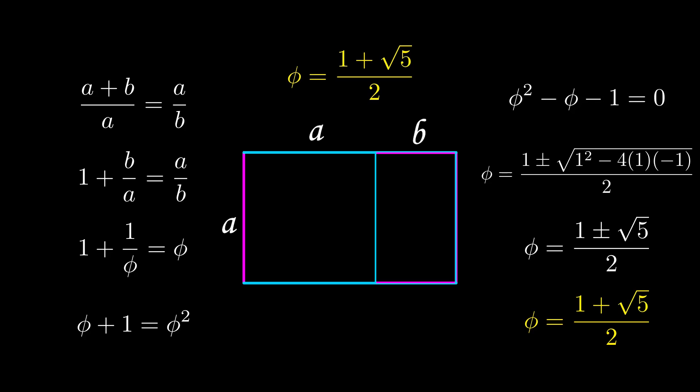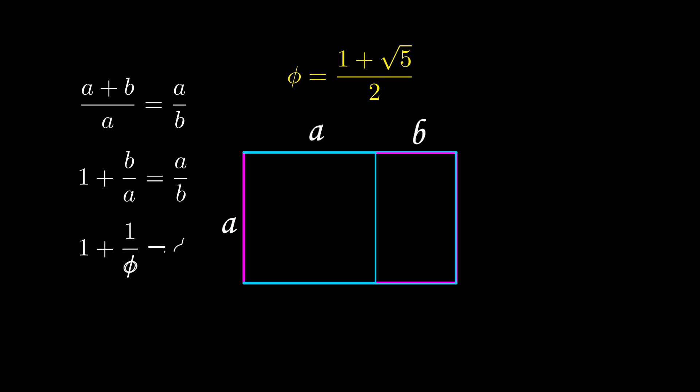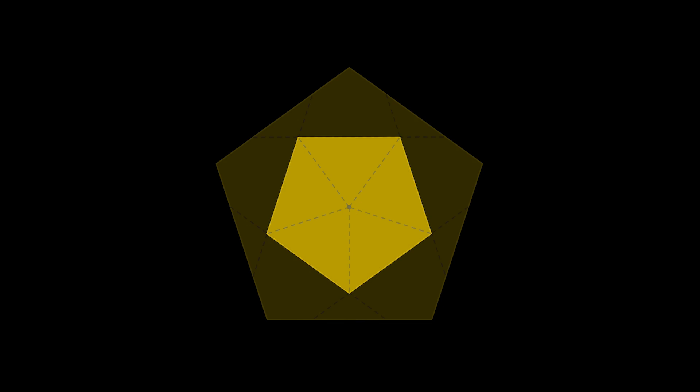So that explains where the golden ratio comes from and what its value is in terms of the golden rectangle. But it does not explain why we get the golden ratio with folding our regular pentagon. Now, the golden rectangle does not necessarily appear in a regular pentagon, but the golden triangle does.